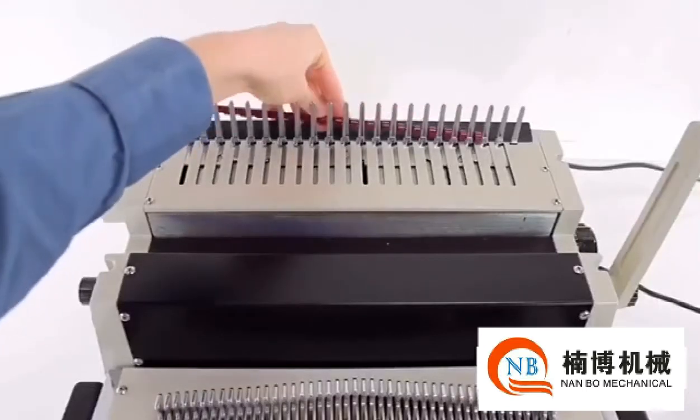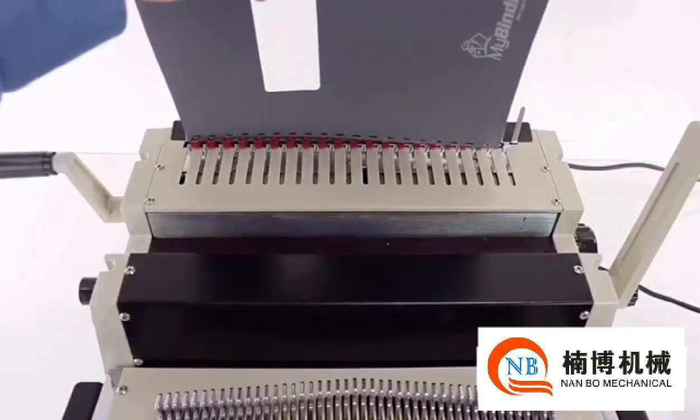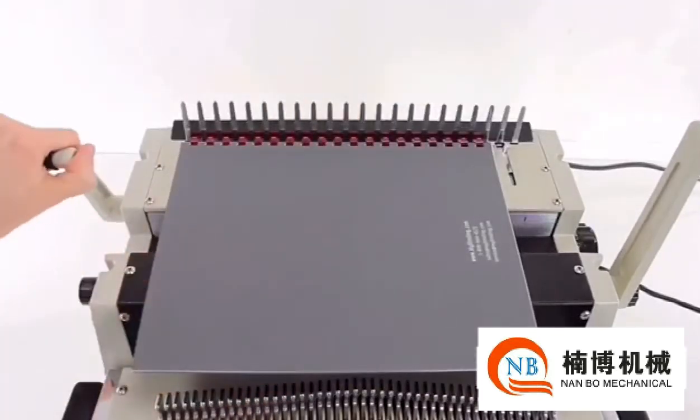Now for comb binding. Insert your binding on the top and open it with the left lever. After you've punched with the comb die, place your pages between the tines. Close the binding and remove your finished book.